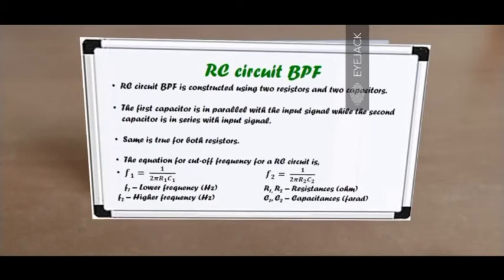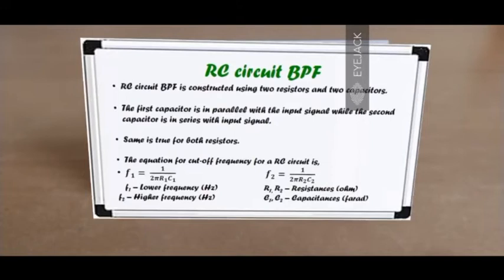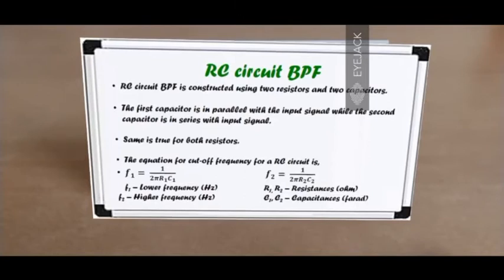What is the RC bandpass filter? It is a filter constructed using two resistors and two capacitors. The first capacitor is in parallel with the input signal while the second is in series. The first resistor is in series with the input signal whereas the second is in parallel. The equation for the cutoff frequency is F = 1 / (2π × R × C). F1 represents the lower cutoff frequency and F2 represents the higher cutoff frequency, each dependent on specific resistor and capacitor values. Resistances are measured in ohms, capacitance in farads, and frequency in hertz.